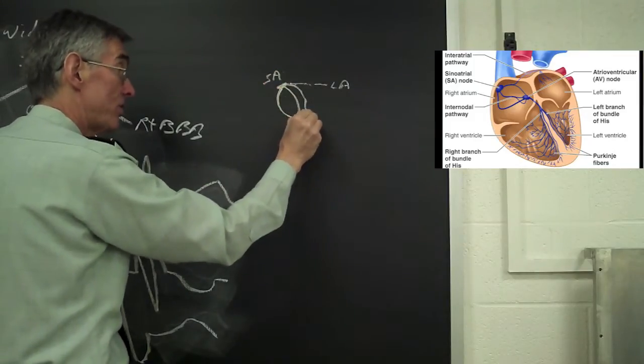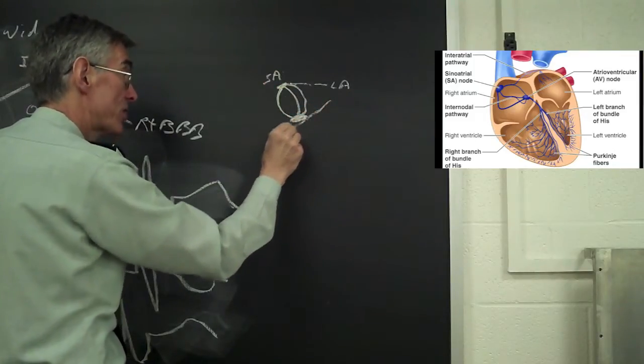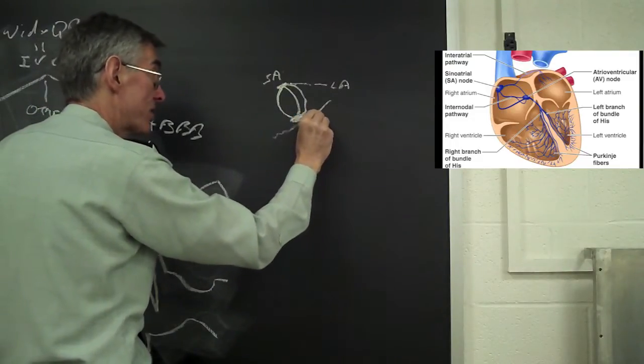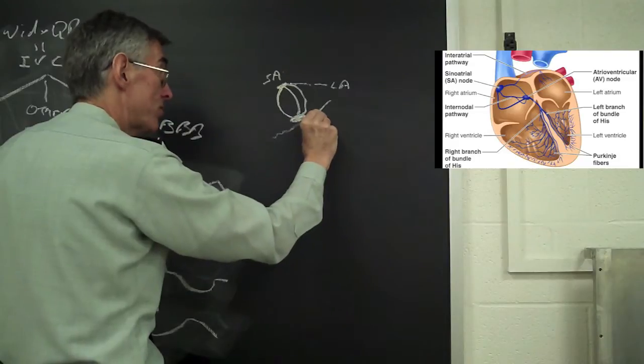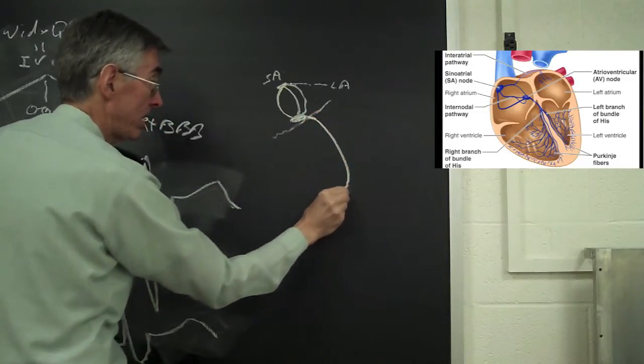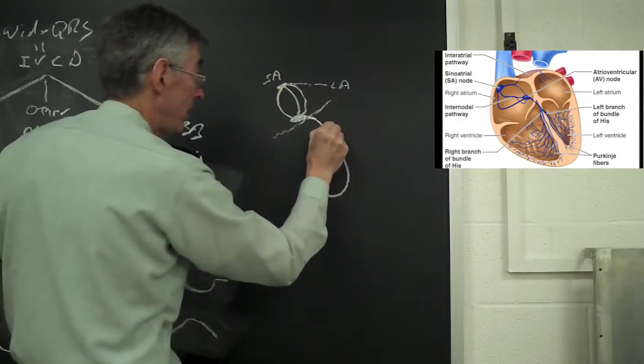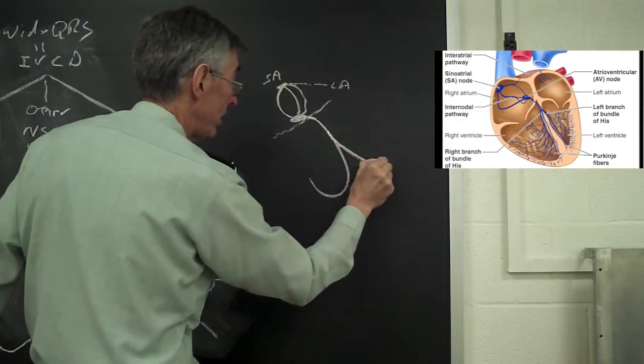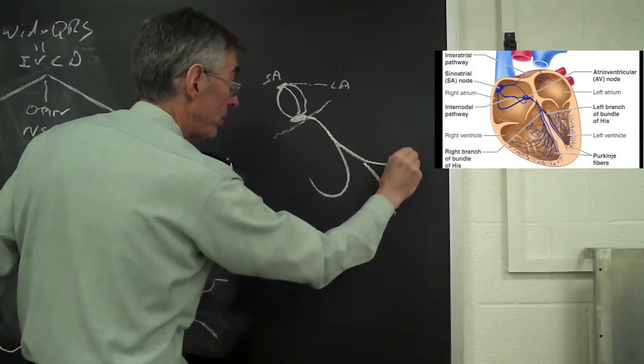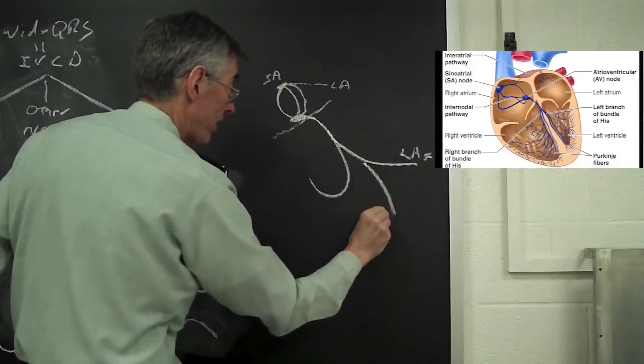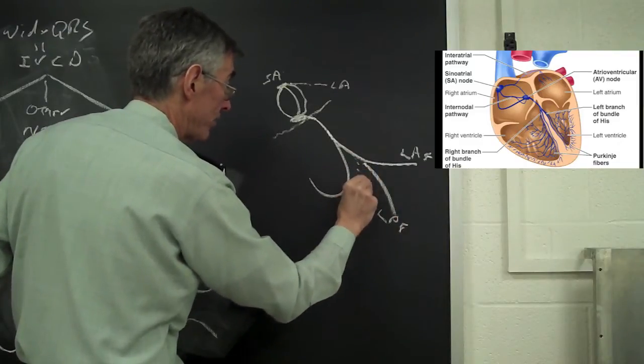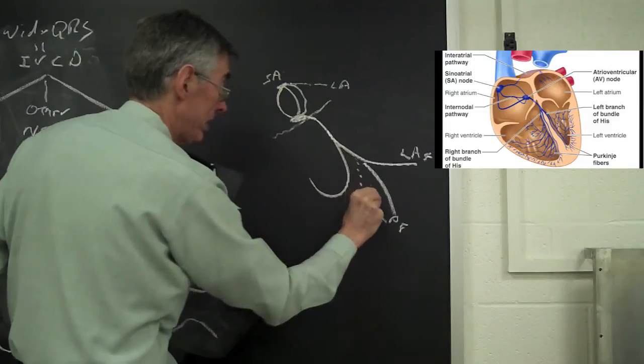The AV node is on the atrial side of the fibrous skeleton, which then gives through a hole here in this fibrous skeleton the His fibers that then come down and the His-Purkinje system gives off a right bundle, a left bundle, that then gives off a left anterior fascicle, a left posterior fascicle, and sometimes we get a septal fascicle here.